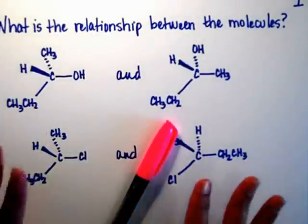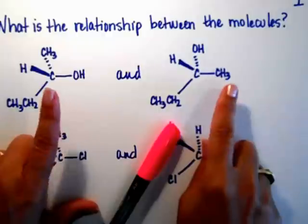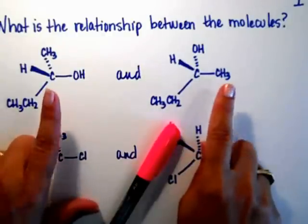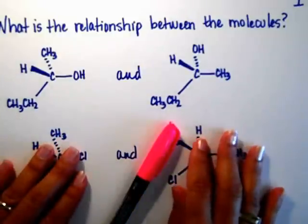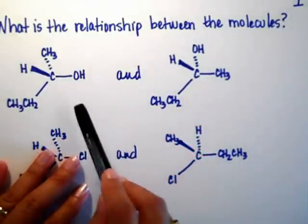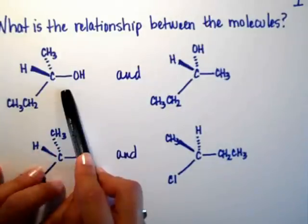This is one of my favorite type of problems. You're given two molecules and you have to actually tell me whether they're identical, whether they're constitutional isomers, enantiomers or diastereomers. So the first thing we're going to do is check if the two molecules are connected the same, if they have the same groups attached to each other.